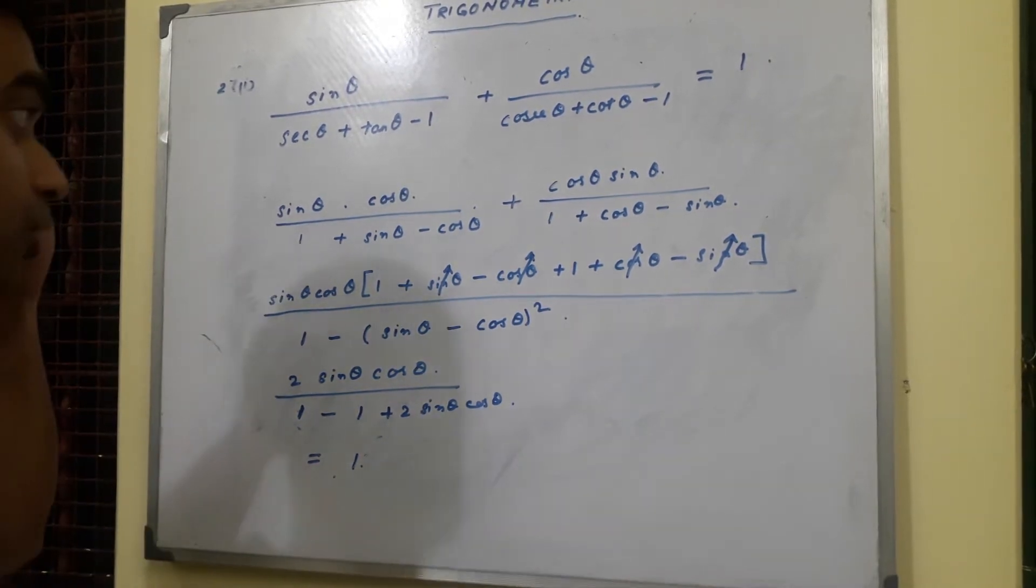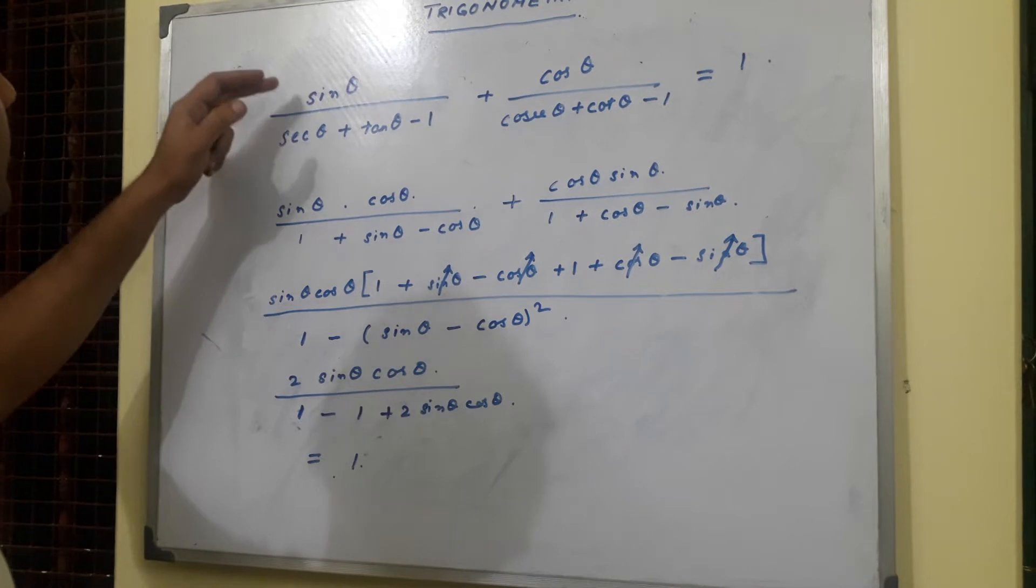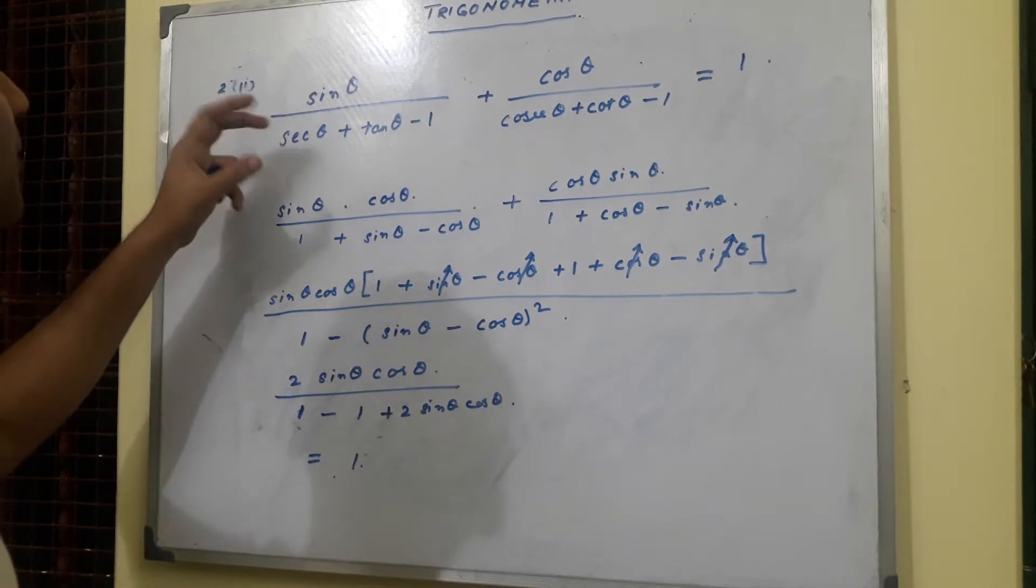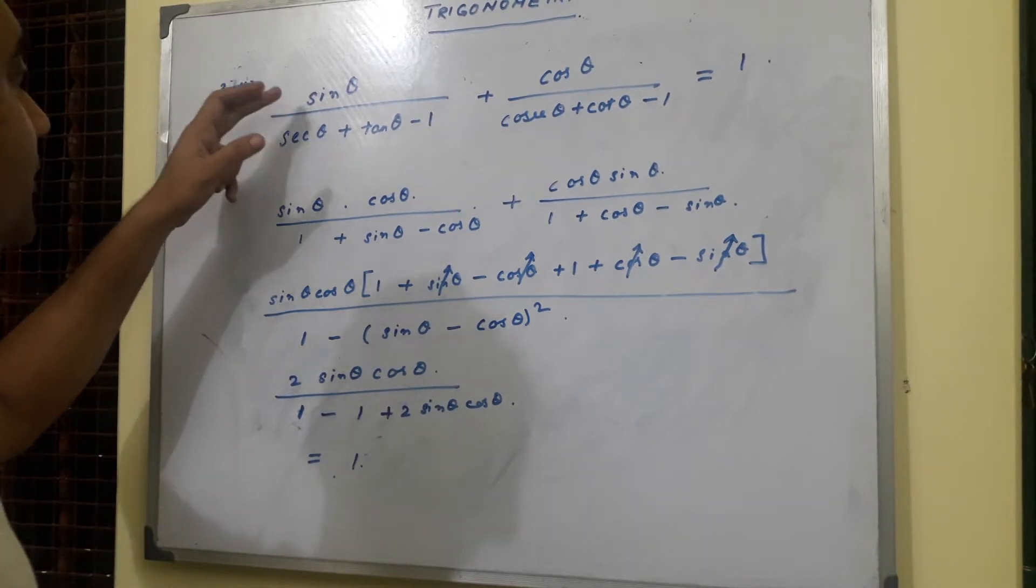Now this sum looks complicated. When such sum comes, just break it down to sin theta and cos theta.